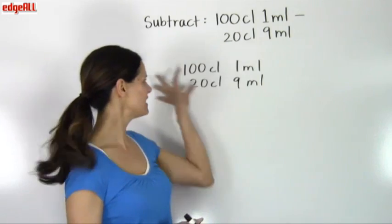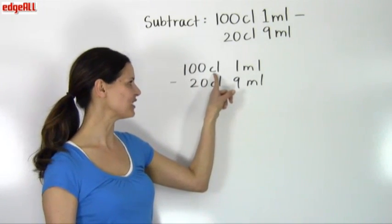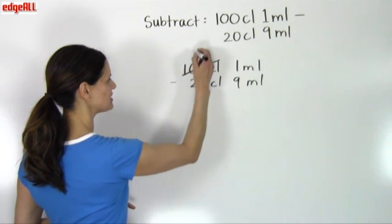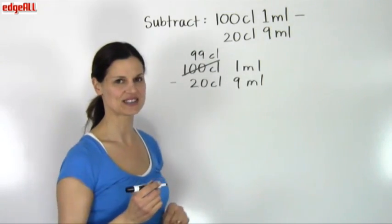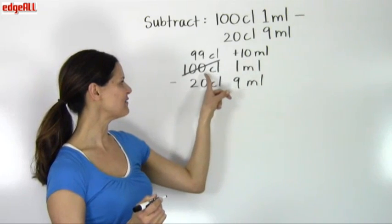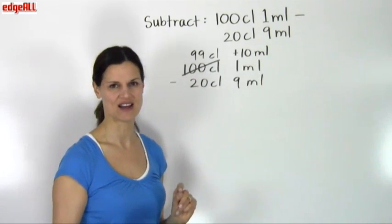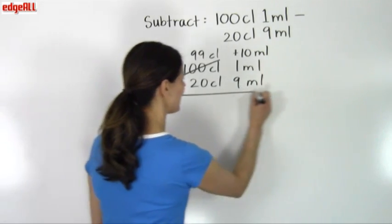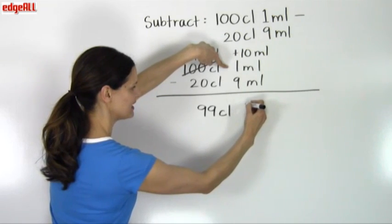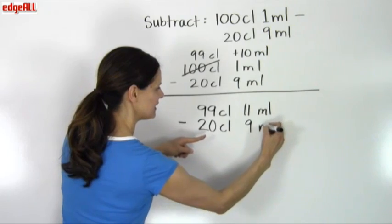What we need to do is borrow 1 centiliter from the 100 and add it over to the milliliters. Borrowing 1 centiliter means the 100 centiliters becomes 99 centiliters. And we add 10 milliliters to the 1 milliliter because 1 centiliter is equivalent to 10 milliliters. Rewriting the problem: we now have 99 centiliters, 11 milliliters minus 20 centiliters, 9 milliliters.